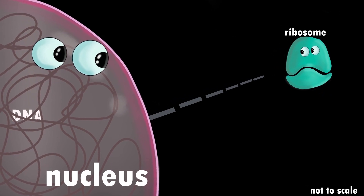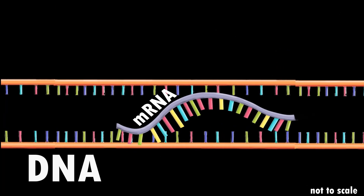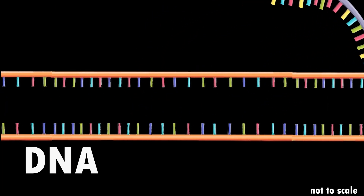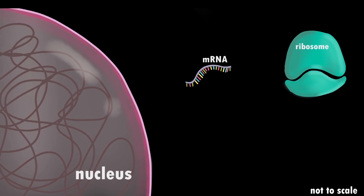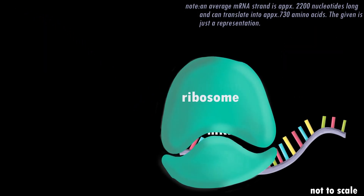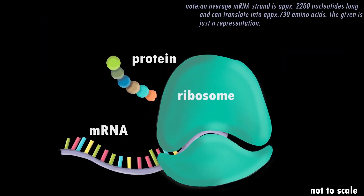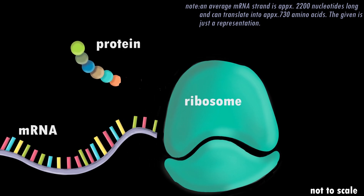During protein synthesis, similar things happen. The DNA can't leave the nucleus, so a gene sequence is copied into an mRNA strand and sent into the cytoplasm, where the ribosome translates it into the protein the gene codes for. These proteins can be used to make your iris brown, or whatever.